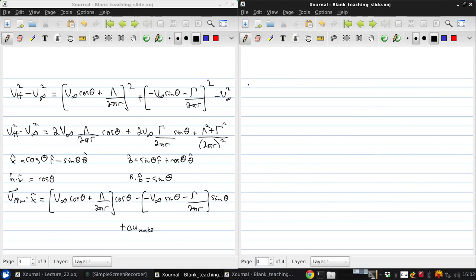Now to evaluate the integrals, first we'll start with the velocity term integral. This is going to be given by negative rho times the integral around the circumference of V infinity cos theta